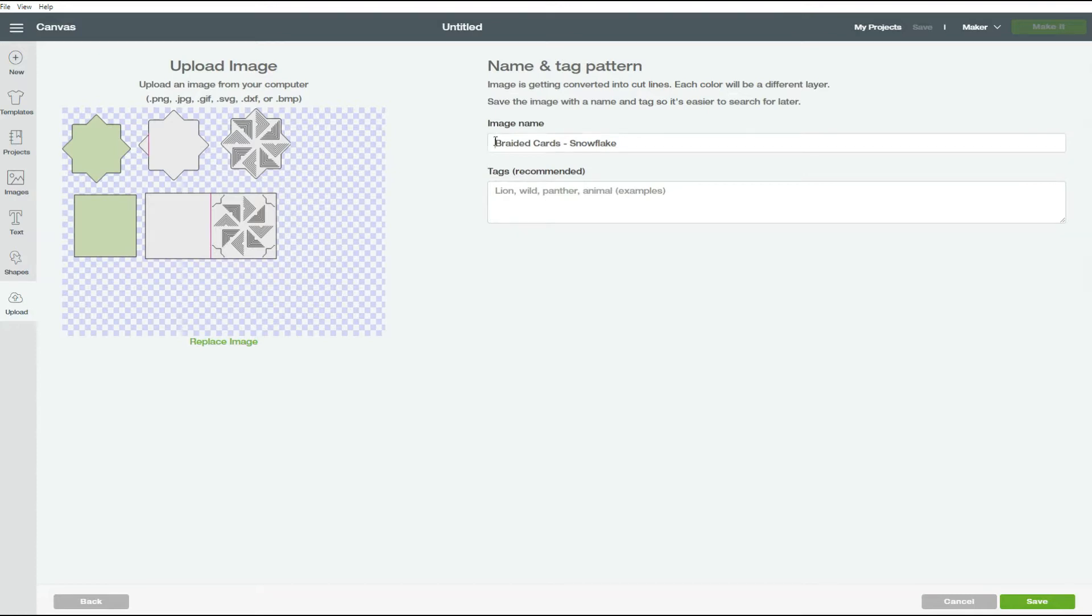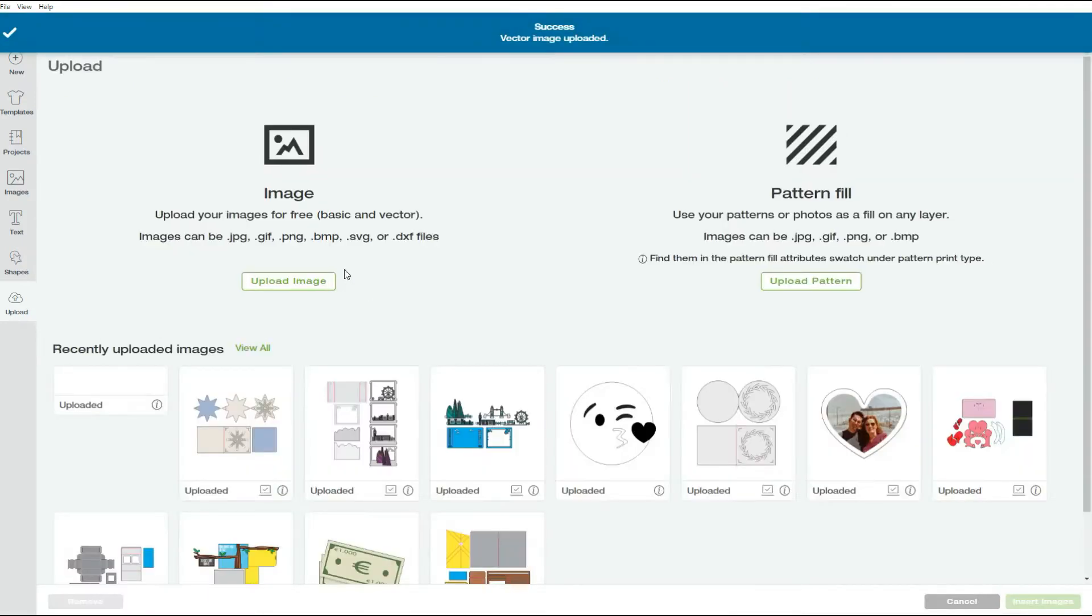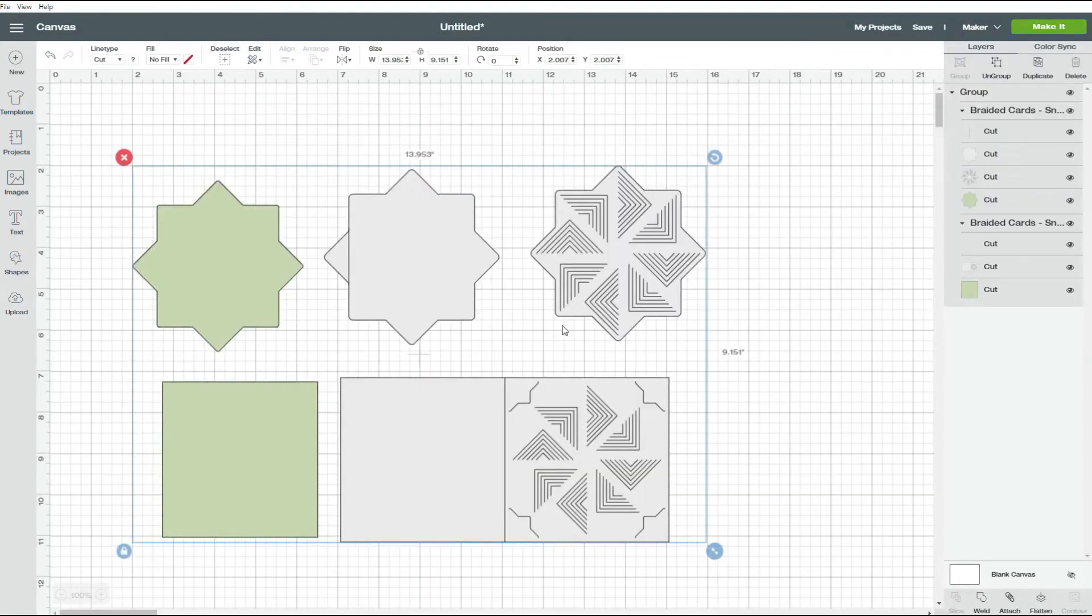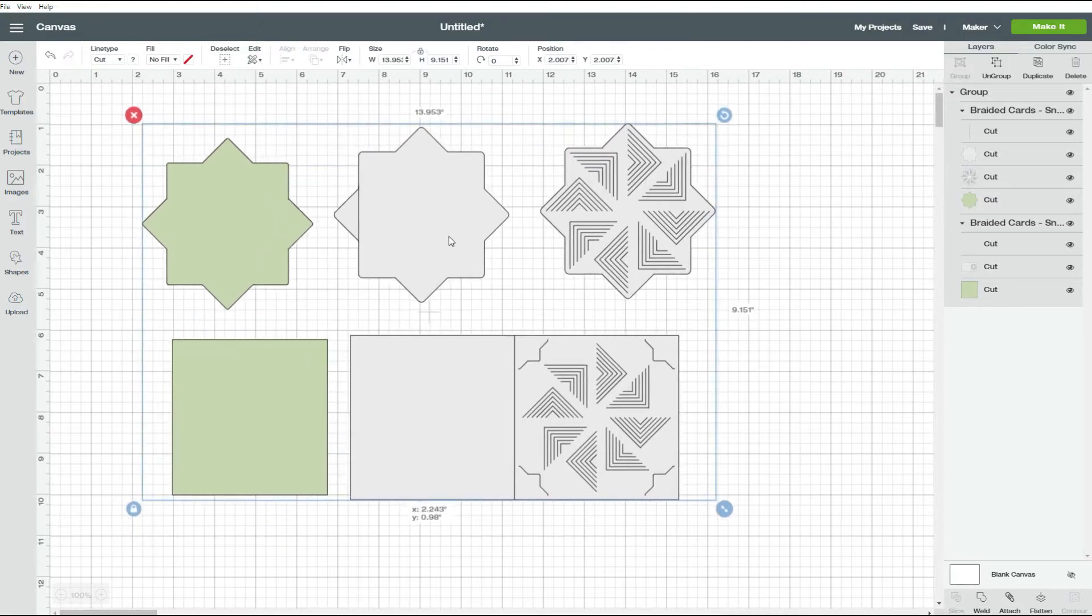Here you can change the name or add tags to your file if you want to and then click on save. To put your file on your canvas, you just click on it until you see that green outline around and then click on insert images. And there's your file on your canvas.